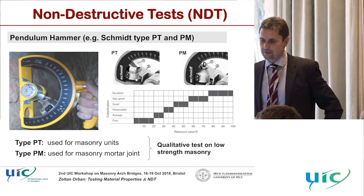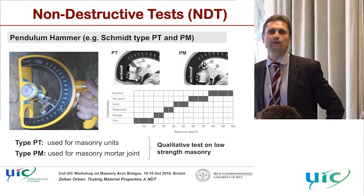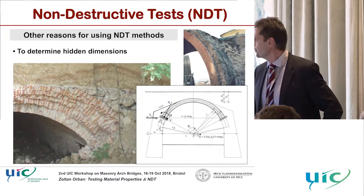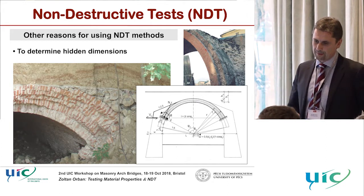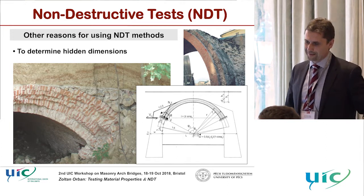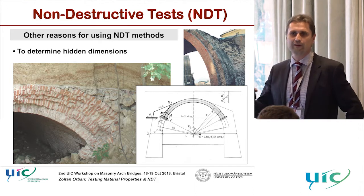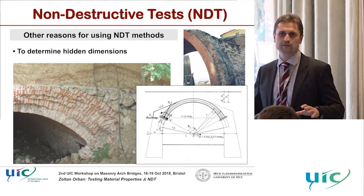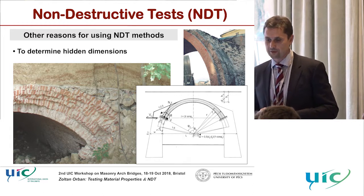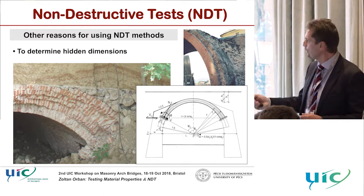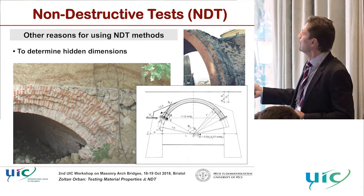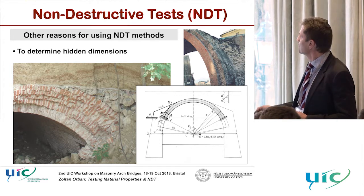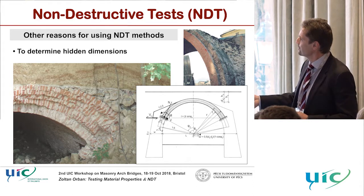There are other reasons for using non-destructive test methods beyond defining mechanical properties. There can be hidden dimensions in masonry, and hidden parameters and features can affect structural behavior very much. For example, variation in the thickness of the arch, the condition of the fill material, or what is behind the arch — all are important unknowns.